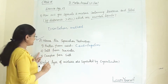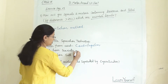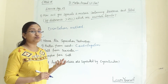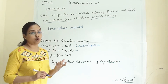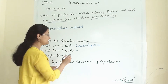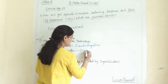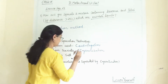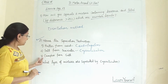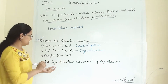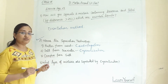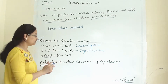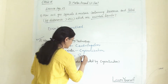Second: salt from sea water. Here we can use evaporation, but if we want the purest form of salt, we use crystallization. Third: camphor from salt. Camphor is a sublimable substance, and when it is mixed with a non-sublimable substance, we use the sublimation technique.